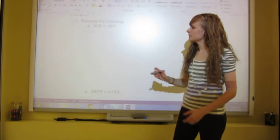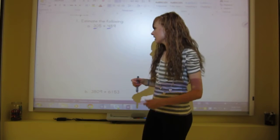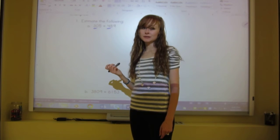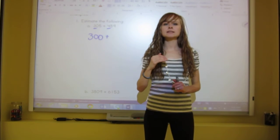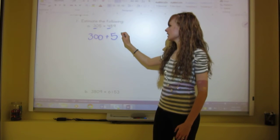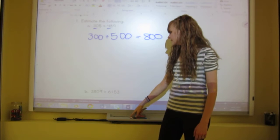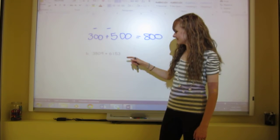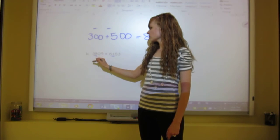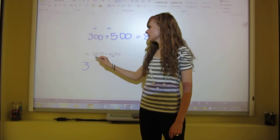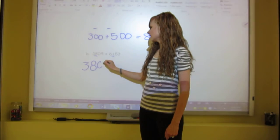Rounding to the nearest hundred means looking at the hundreds digit. In 305, look at the three — right next door is a zero, which is four or less, so the three rests and stays a three: 300. In 489, look at the four — right next door is an eight, which is five or more, so we raise the score: the four becomes five, giving 500. Add them together and the estimate is about 800. For the next problem, looking at the hundreds digit: we have 380 — the zero next door lets the three rest — and 625 — the five raises the one to two — giving 600 and 200.